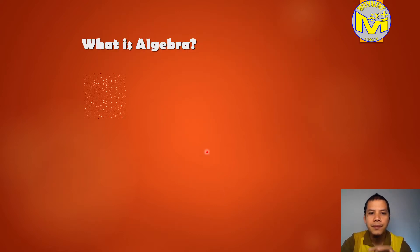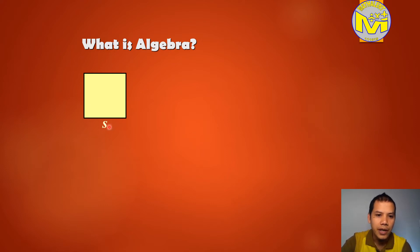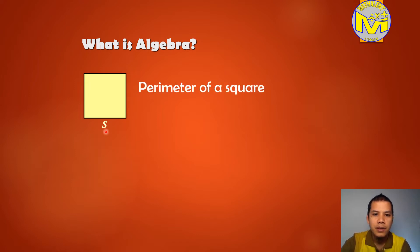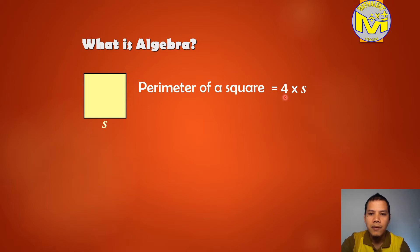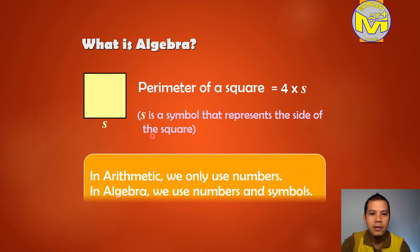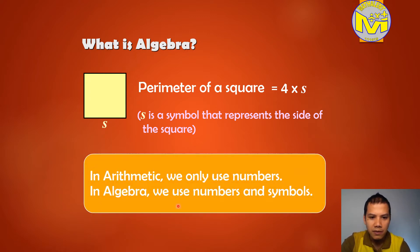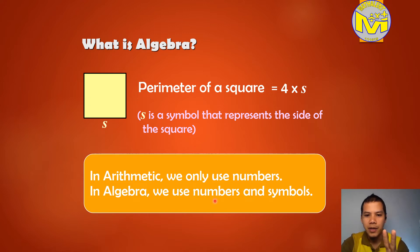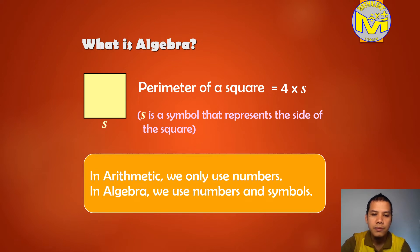What is algebra? Again, look at the square. We have S. What is S? S represents the side of the square. So what is the perimeter of the square? The same thing — we multiply by 4: 4 times S is 4S. S is a symbol that represents the side of the square. Now, this is the meaning of algebra. In algebra, we use numbers and symbols. Remember, we have two things in algebra: numbers and symbols. In arithmetic, we have only numbers.